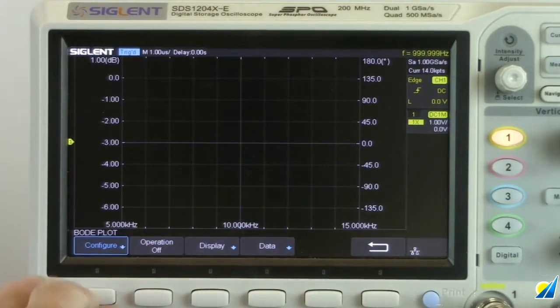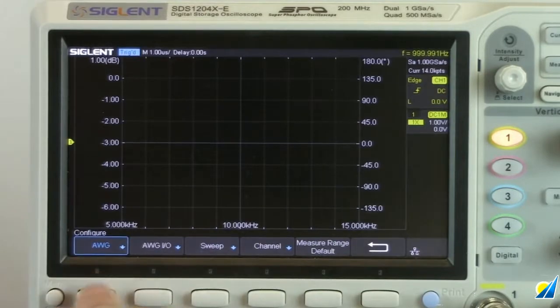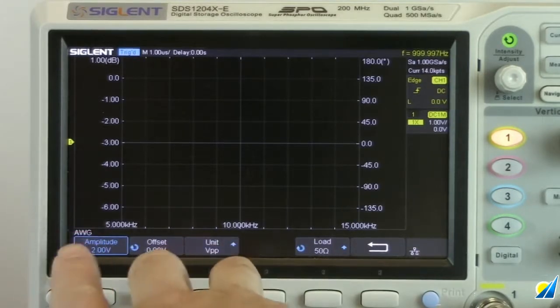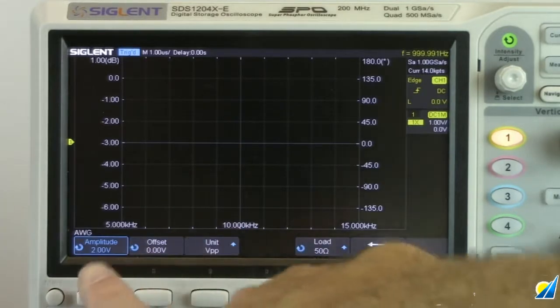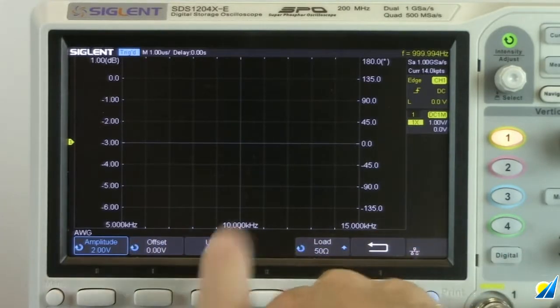Let's go to configure and you can see the AWG. With the AWG menu, that allows us to configure the amplitude and units as well as the output load setting. In this case, we're just going to do two volts peak to peak at 50 ohms.